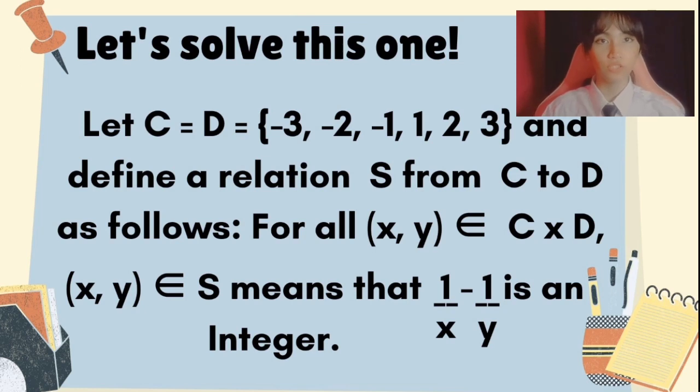Now that I've introduced to you what Language of Relations and Functions is, help me solve this problem. Let set C equals to the elements of set D: negative 3, negative 2, negative 1, 1, 2, and 3. And define our relation S from set C to set D as follows.